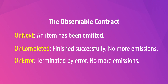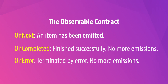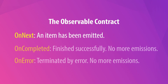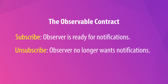The contract is as follows. An observable should communicate with its observers via the following notifications. OnNext tells the observer that an item has been emitted. OnCompleted tells the observer that the observable has completed successfully and will no longer be emitting values. And OnError tells the observer that the observable has been terminated due to a specified error and will no longer be emitting values. Furthermore, the contract states that an observer will communicate with an observable via Subscribe, which tells the observable that an observer is ready to receive notifications, and Unsubscribe, which tells the observable that the observer no longer wants to receive notifications.